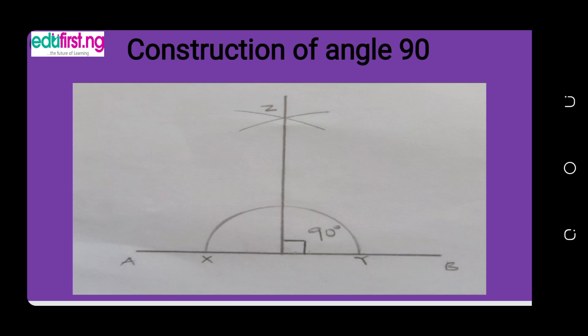When you draw the first arc, remove the pin of your compass and bring it to point Y. Mount it there so that you can draw the other arc, still at Z. The intersection between the two arcs is where you are going to draw a vertical line from the top down until it meets line AB. When you do that, you have constructed angle 90 degrees.